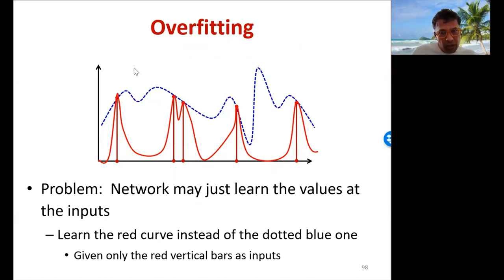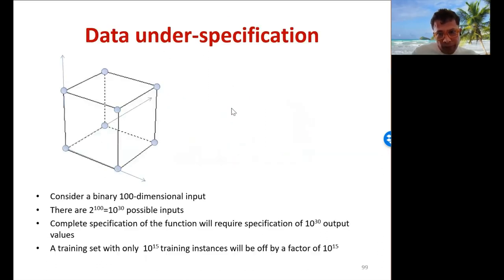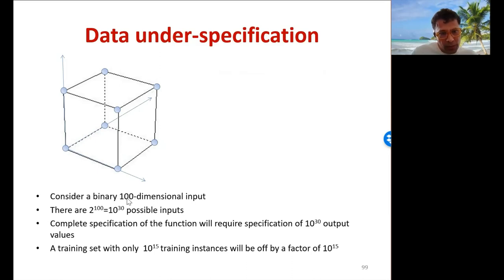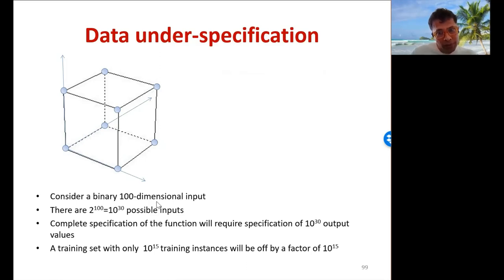And even this figure is wrong. The actual number of training instances will not be anything like what we have shown — it will be far fewer. To get an idea of how few data we actually have, consider this example. Say we have a 100-dimensional input, which is actually fairly small. Your typical image will have thousands or even millions of pixels, so this is a tiny input.